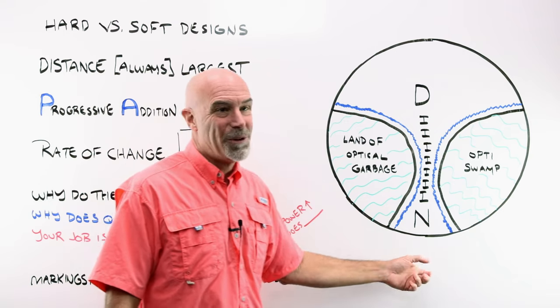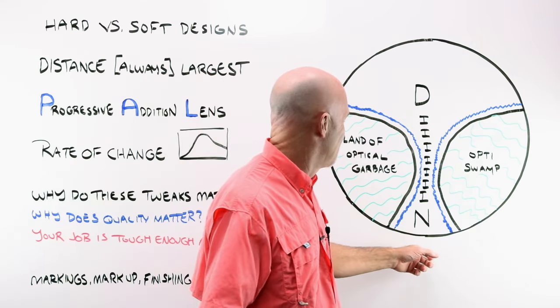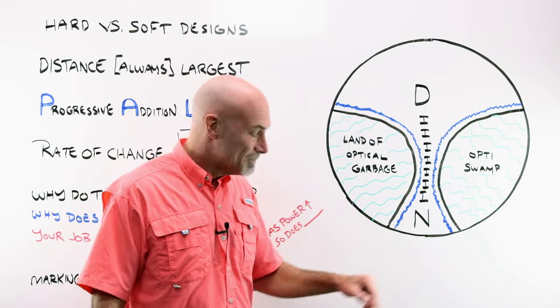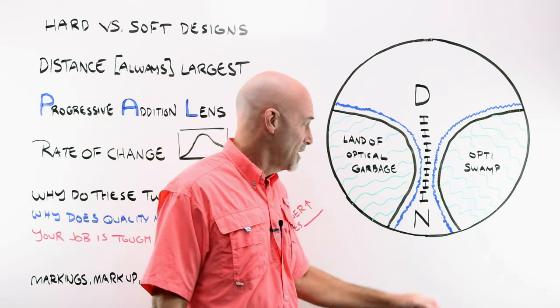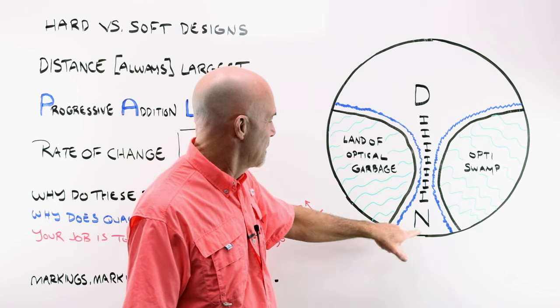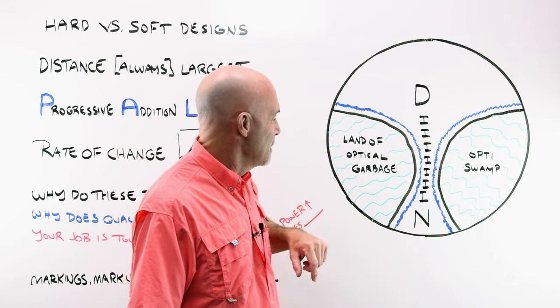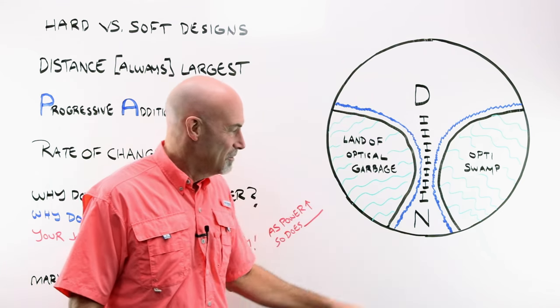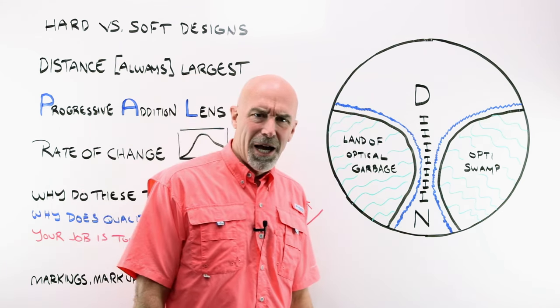Five years goes by. You see them again when they're 60, 65, whatever it might be. Their add power is now up to a two, a 250. The rest of their body's falling apart. Things don't work like they used to. Nothing does. And their add power went up. Distance power stayed the same. They put on the pair of glasses. Nothing else in life works too good. And now neither do their glasses. Why?